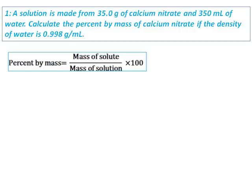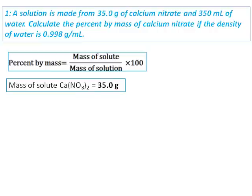This is equal to mass of solute divided by mass of solution times 100. The mass of solute is given as 35 grams. We need to get the mass of solution.